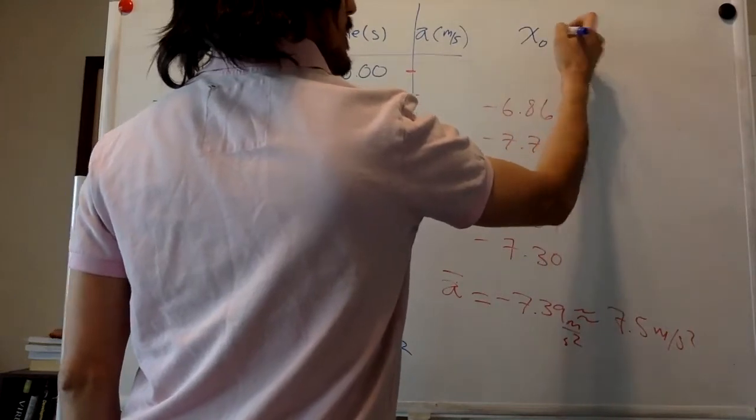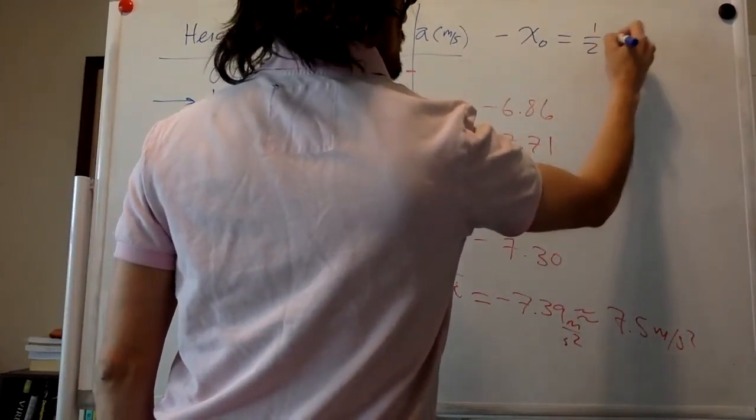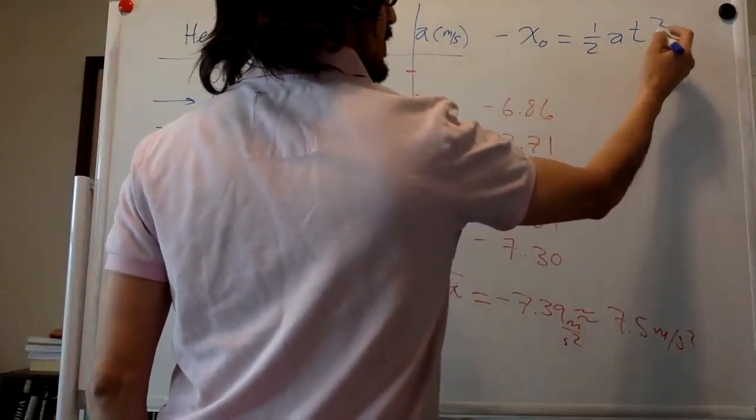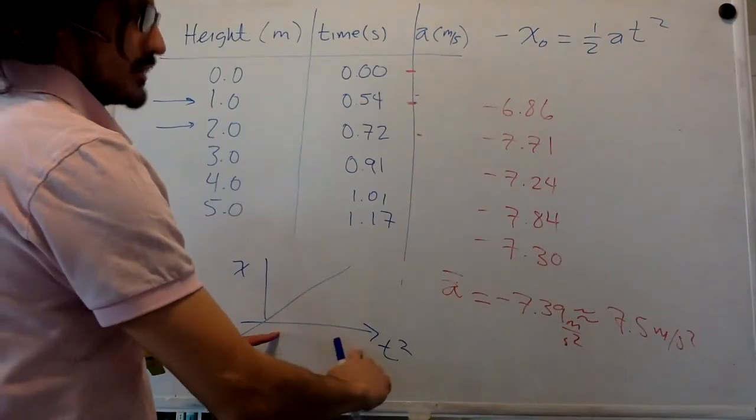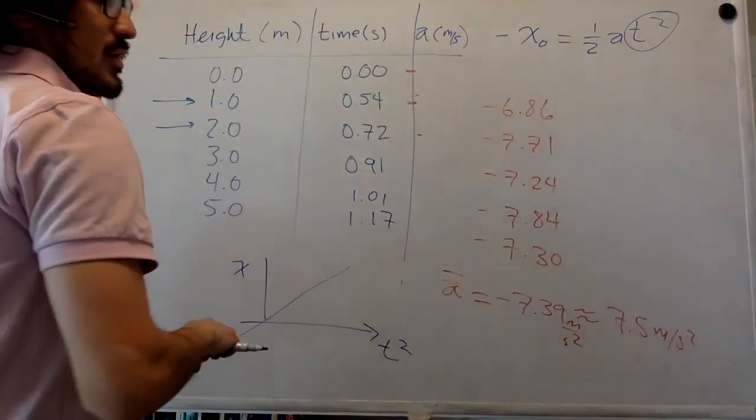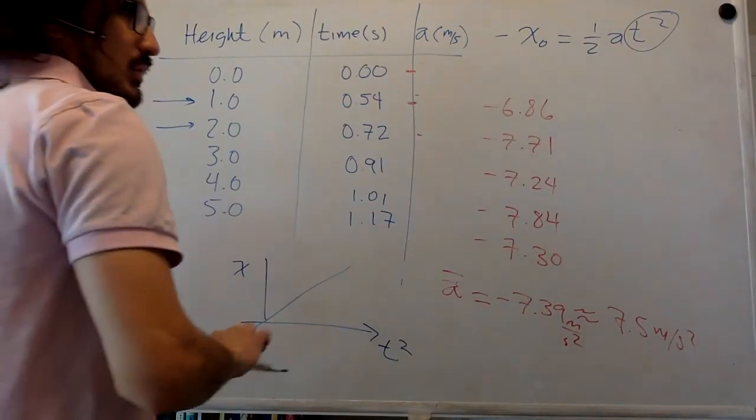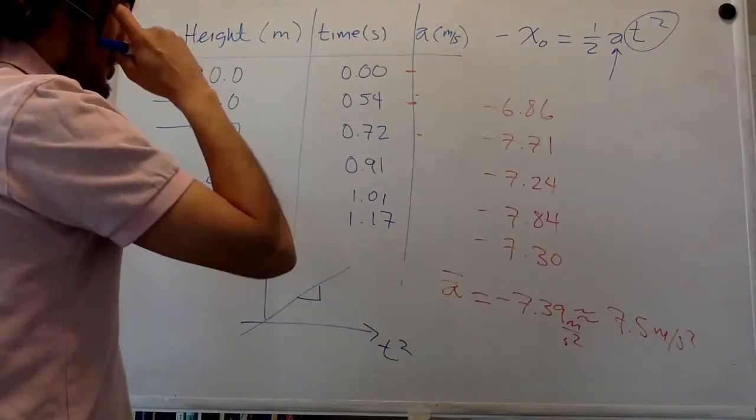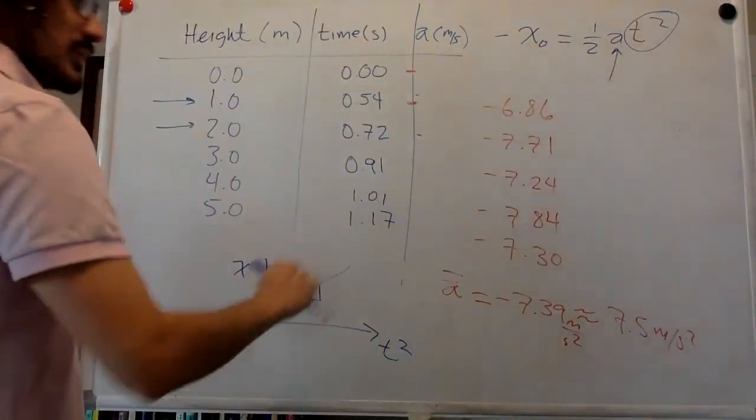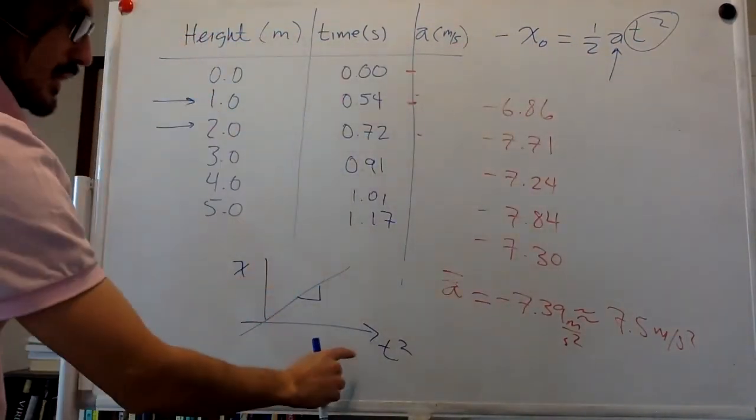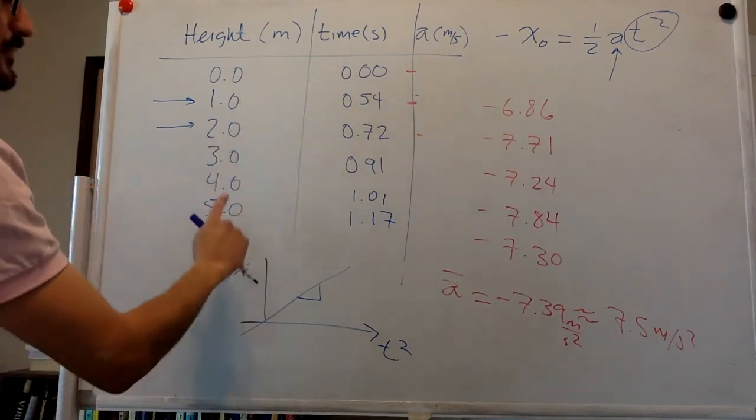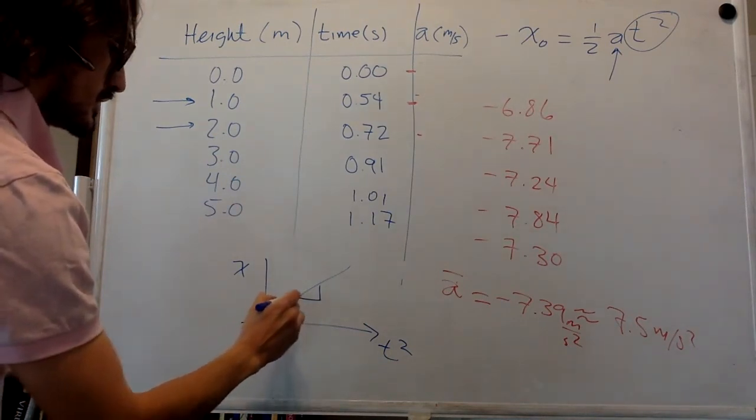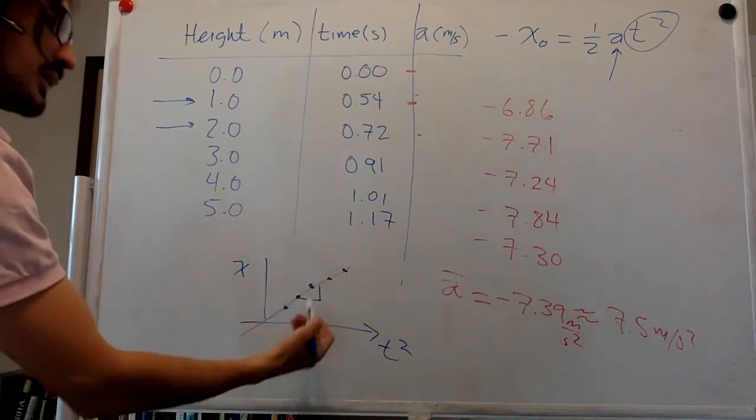So if you plot the y equals ax plus b equation, and in that case, a will be the slope, or twice the slope, because you have the one-half factor in there. So if you plot the position, so this height against the square of the time, you're going to get a straight line. And then you can do a linear fit.